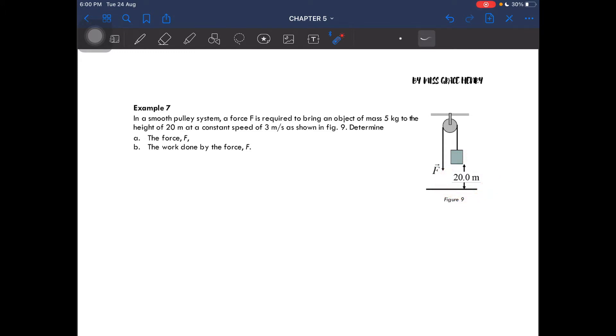Assuming the block starts from here, they need to go up until 20 meters at a constant speed of 3 meters per second. So what information we have: we have the mass which is 5 kilograms, and then we have the displacement which is the height given, 20 meters, and then a constant speed of 3 meters per second.